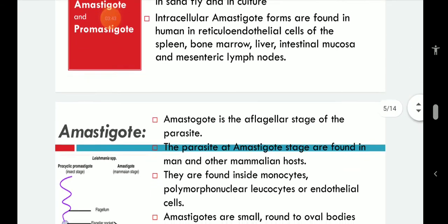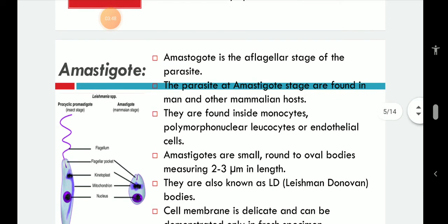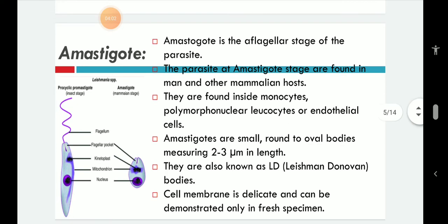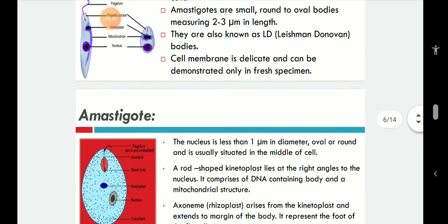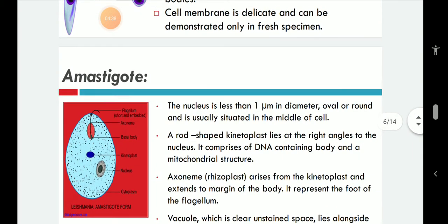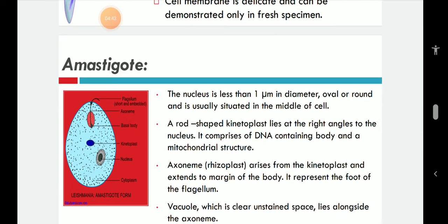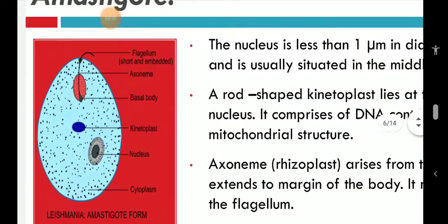The amastigote is the aflagellate stage of the parasite — there is no flagellum in this case. Found in man and other mammalian hosts, they occur inside monocytes, polymorphonuclear leukocytes, endothelial cells, or macrophages. Amastigotes are small, round to oval bodies measuring 2 to 3 micrometers in length, also known as Leishman-Donovan bodies. The cell membrane is delicate and can be demonstrated only in fresh stained specimens. The nucleus is less than 1 micrometer in diameter, oval or round, and usually situated in the middle of the cell.